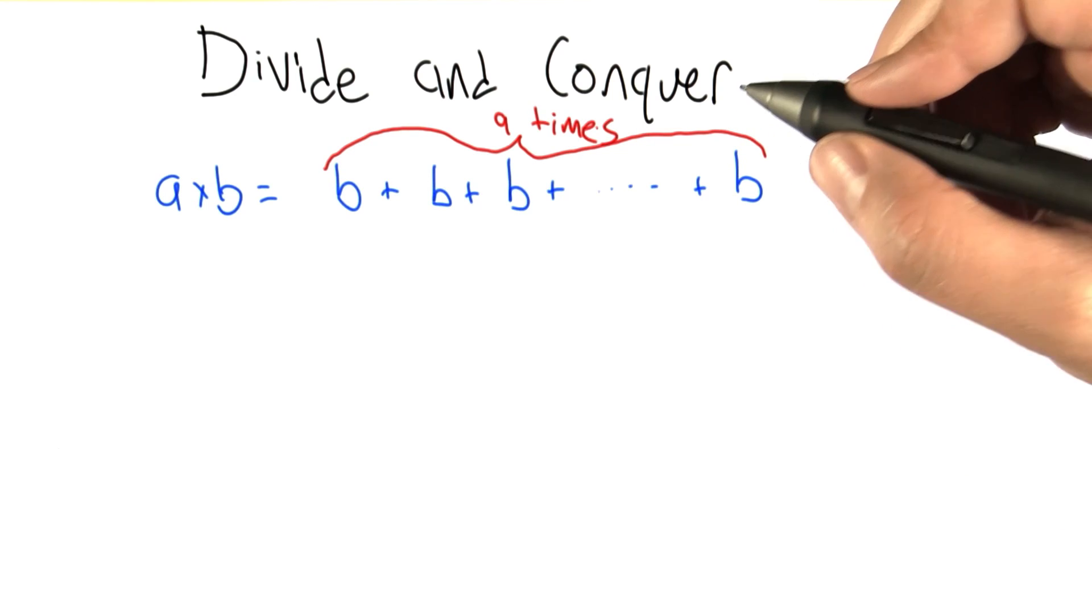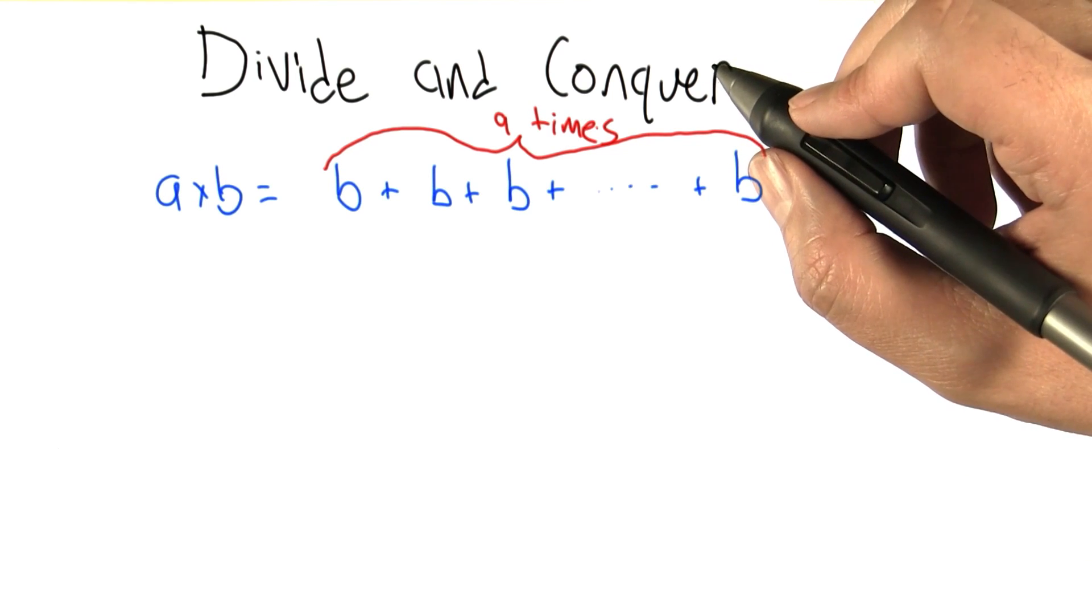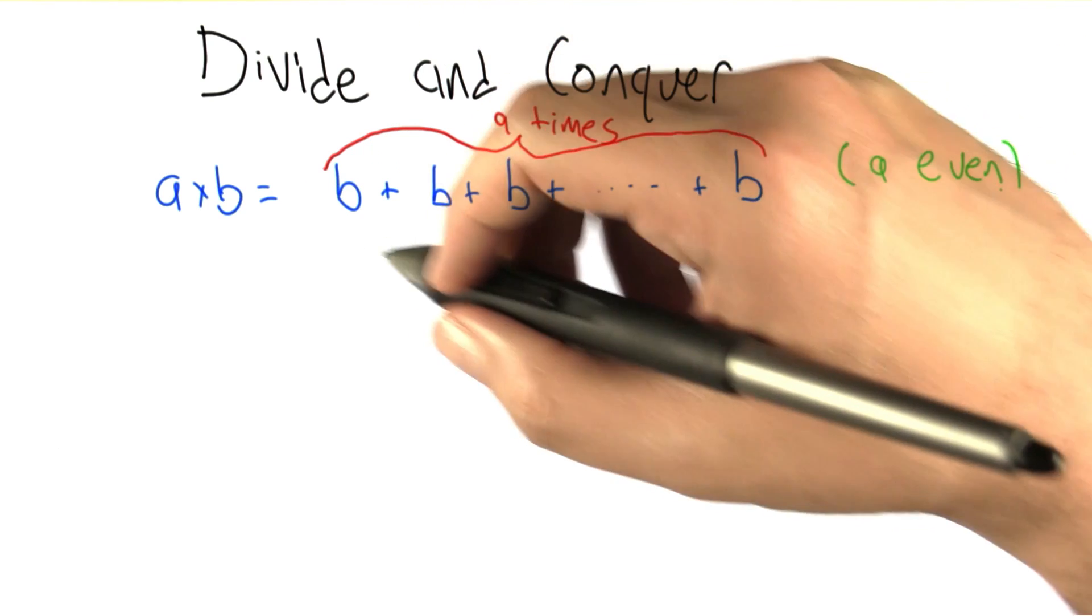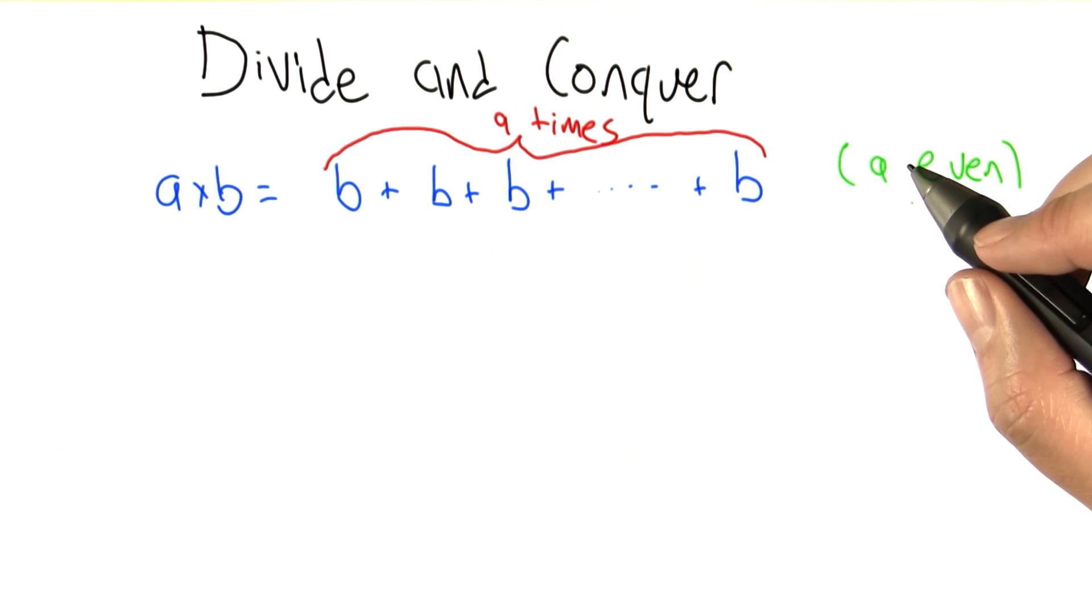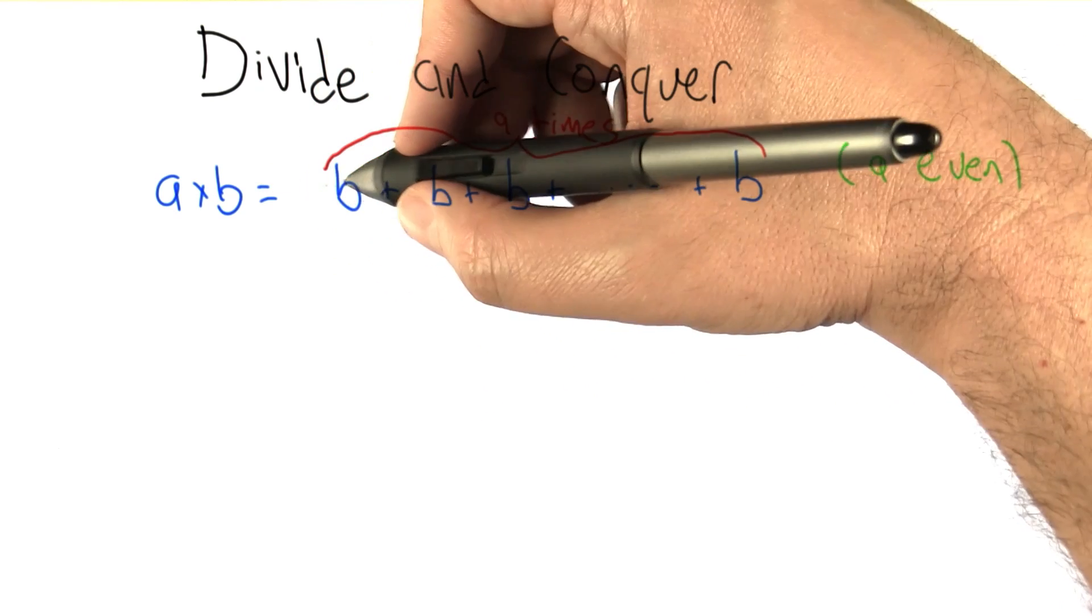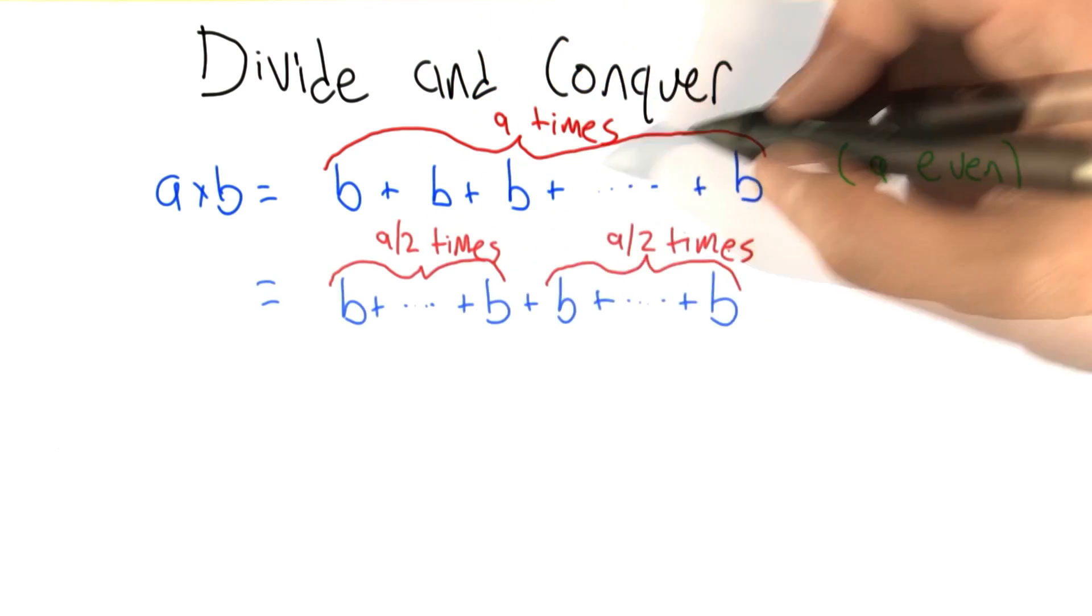Let's just go back for a moment to what multiplication is, at least integer multiplication. It is repeated addition. a times b, and let's focus for the moment on the case where a is even, can be written as b plus b plus b plus b, repeated a times.